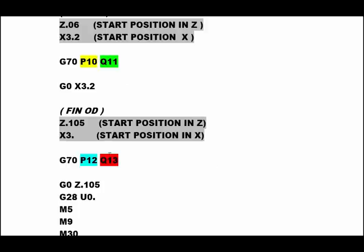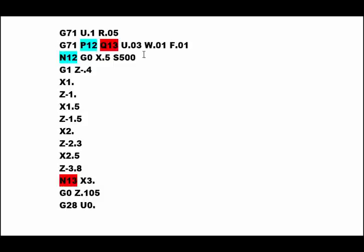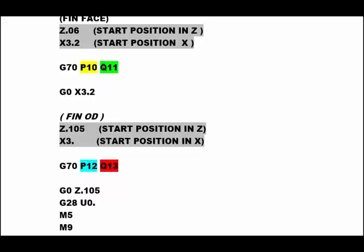The finish OD does the exact same thing. We start the tool in the same position as the roughing canned cycle, then G70 looks for the geometry between P12 and Q13, which is N12 and N13 of the geometry portion of the G71 canned cycle. So it just takes one line for the finish face pass and one line for the finish turning OD pass. That's how G70 is used for finish facing and finish OD turning.